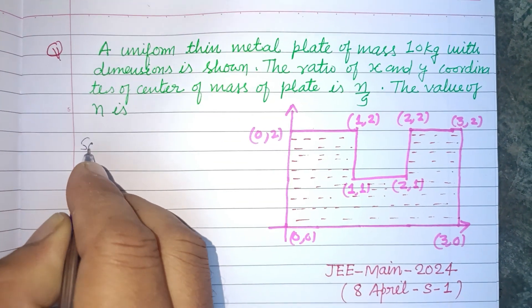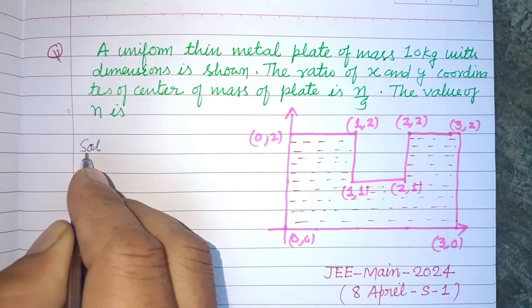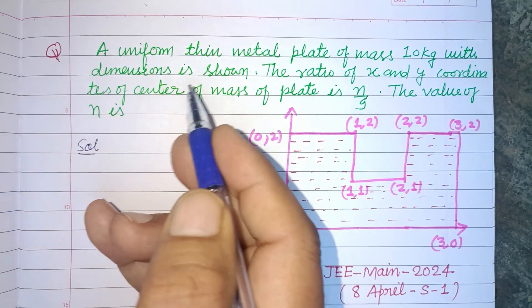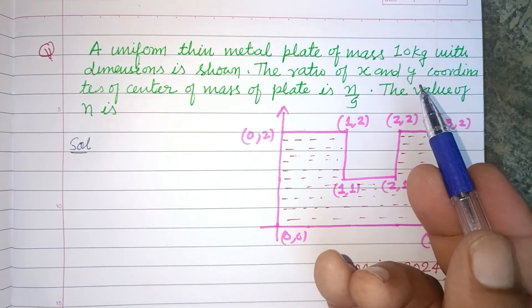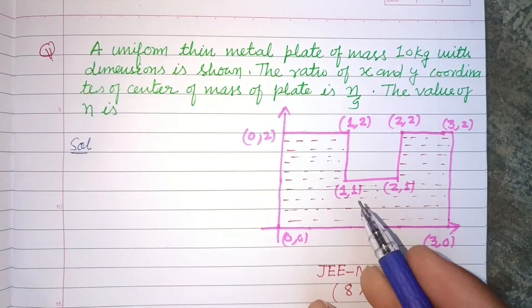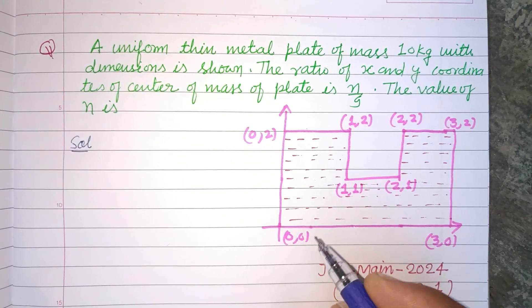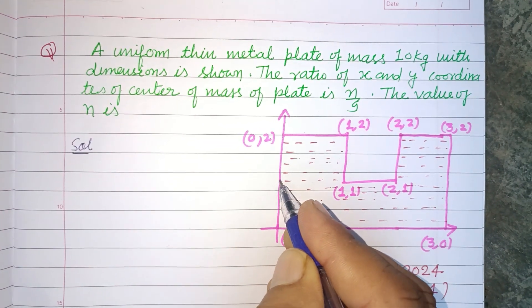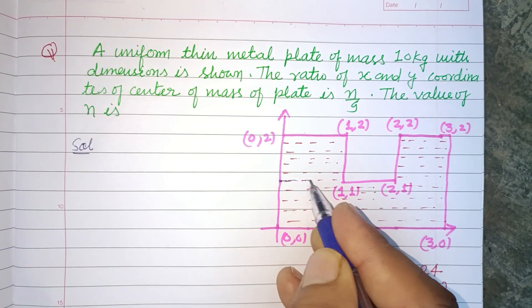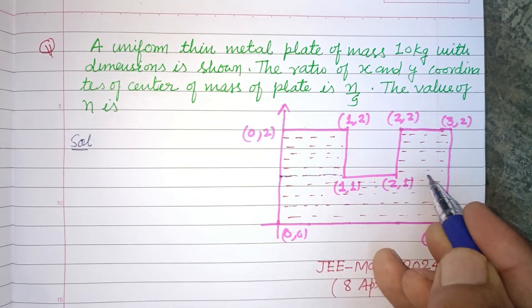So students, since the metal plate is uniform, mass is distributed uniformly. So first we divide it into parts.